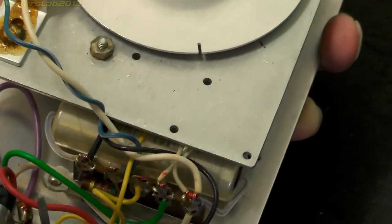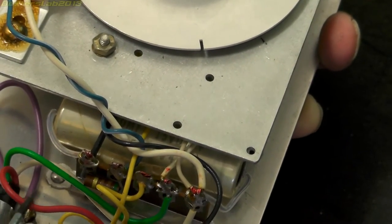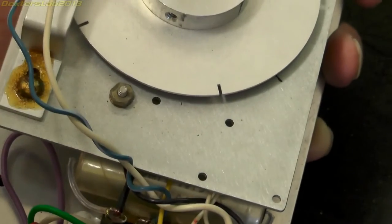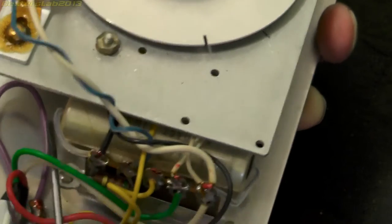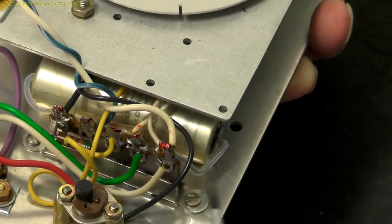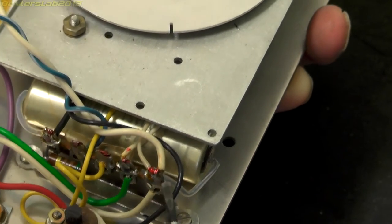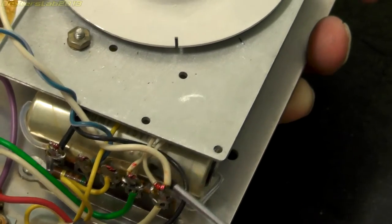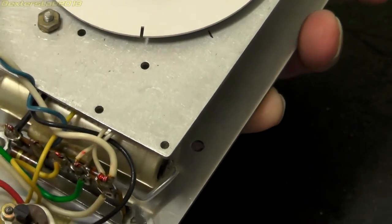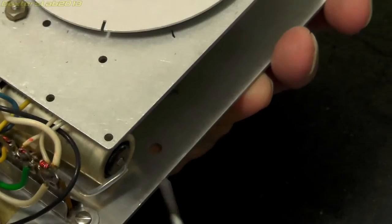So we've got purple going to earth, red comes over to the transistor, we've got then white and green. They come over to these two points here. Okay, so those go directly to the motor.